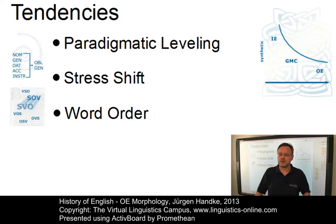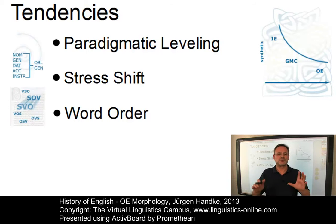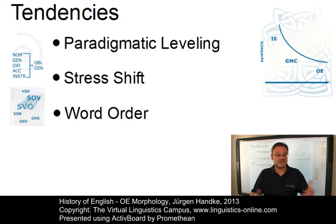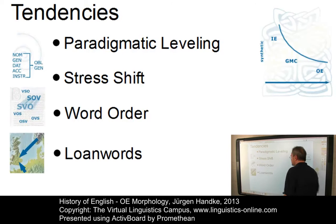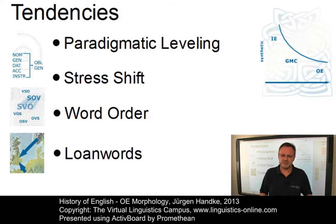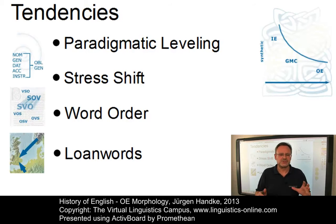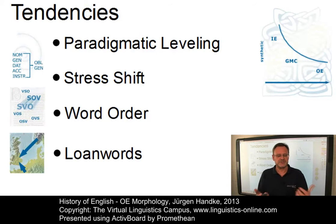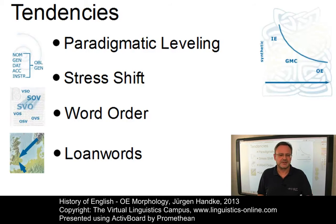Thus, syntax provided a kind of backup system for assuring intelligibility when inflections were lost. Hence, syntax, though not necessarily a cause and definitely not the focus of this e-lecture, was a contributing factor for the weakening of Old English inflections. And since in Old English the necessity arose to adopt thousands of loanwords from two other synthetic languages, namely Old Norse and Old French, a further effect could be seen. Since loanwords have to be made compatible with the inflectional system of the borrowing language, the simplest solution was to drop the inflections altogether, a procedure that had already been used to some extent with Latin words in Old English.